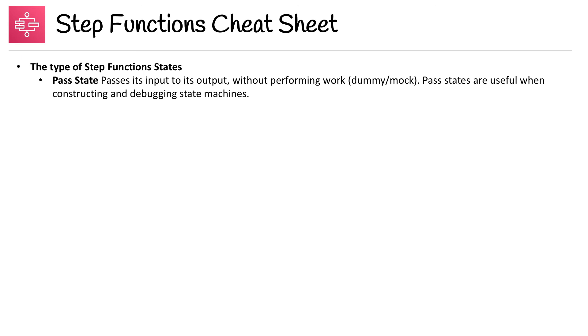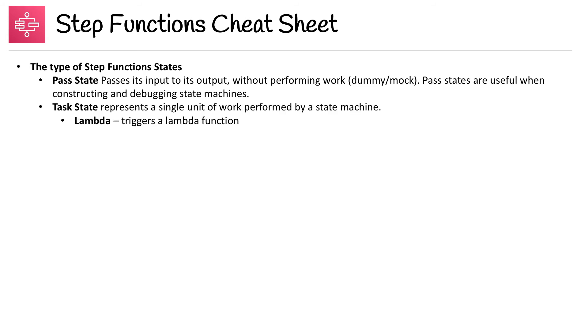Let's break down the types of states for Step Functions, which makes up everything about step functions. The Pass state passes its input to its output without performing work — think of it as a dummy or mock. Pass states are useful when constructing and debugging state machines. The Task state represents a single unit of work performed by the state machine, such as triggering a Lambda function.